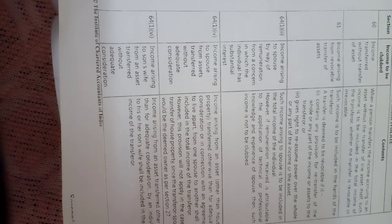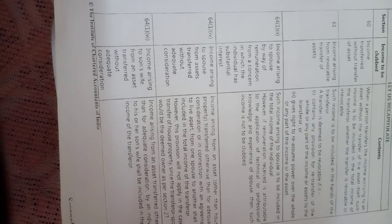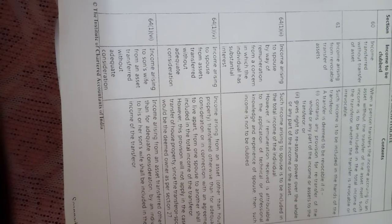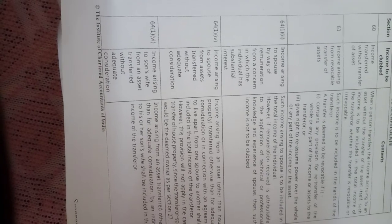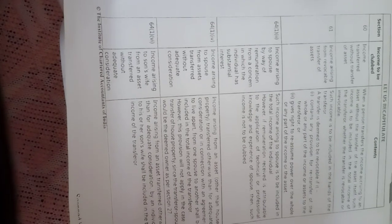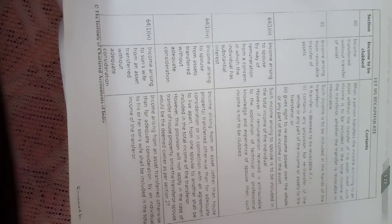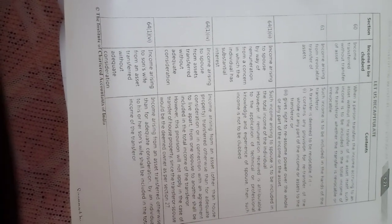According to Section 64(1)(6), income arising to the son's wife from an asset transferred without adequate consideration — the same provision applies to the son's wife. If some asset is transferred to the son's wife without adequate consideration, whatever income arises from that property will be considered as the income of the transferor.